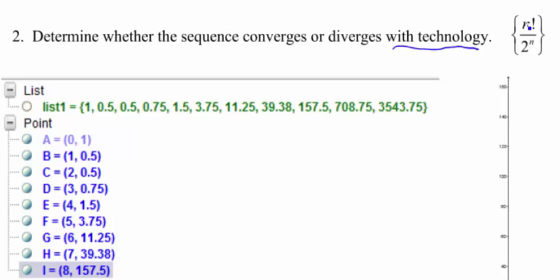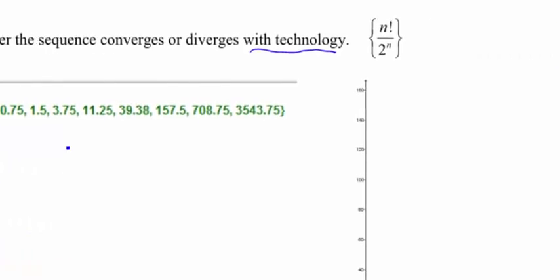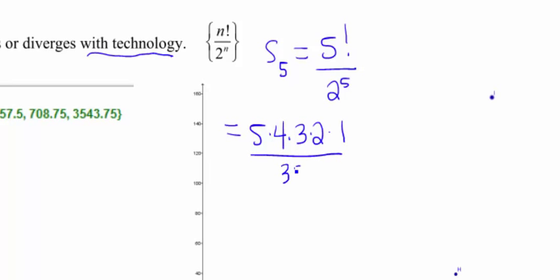If you guys have never seen this factorial before, for example, our S sub 5 is gonna be 5 factorial over 2 to the 5th. What that factorial means, and there's a button in your graphing calculator in your math menu. That means we're gonna do 5 times 4 times 3 times 2 times 1, all over 2 to the 5th, which is 32.